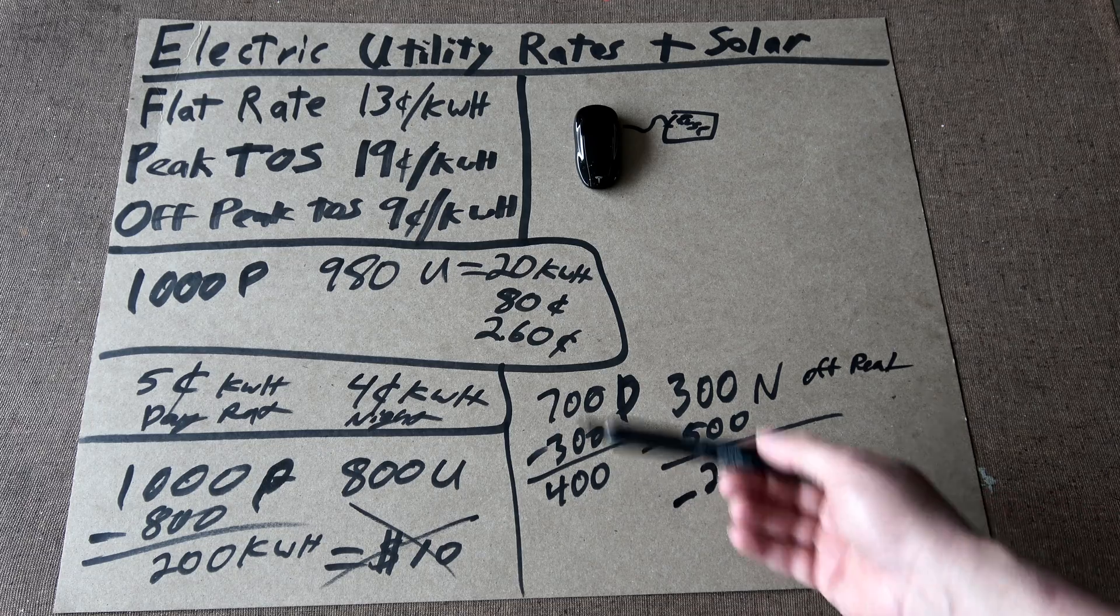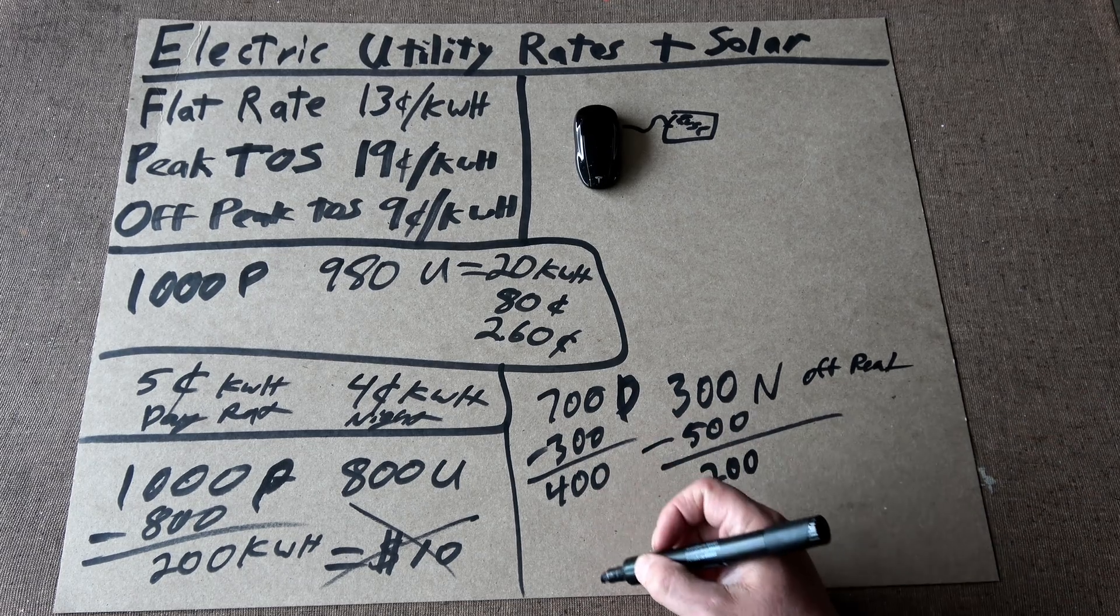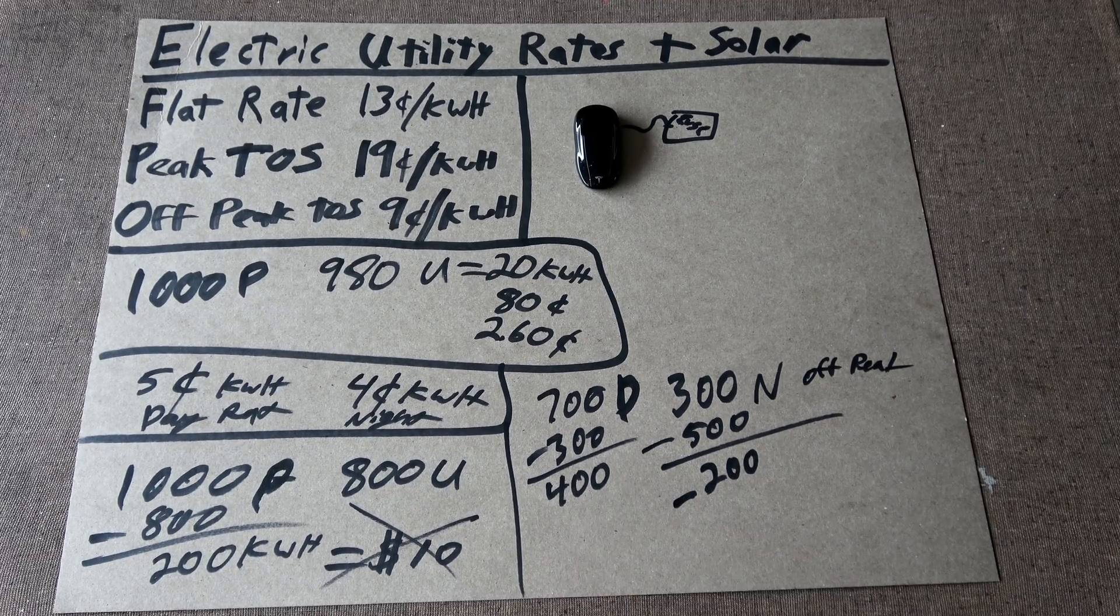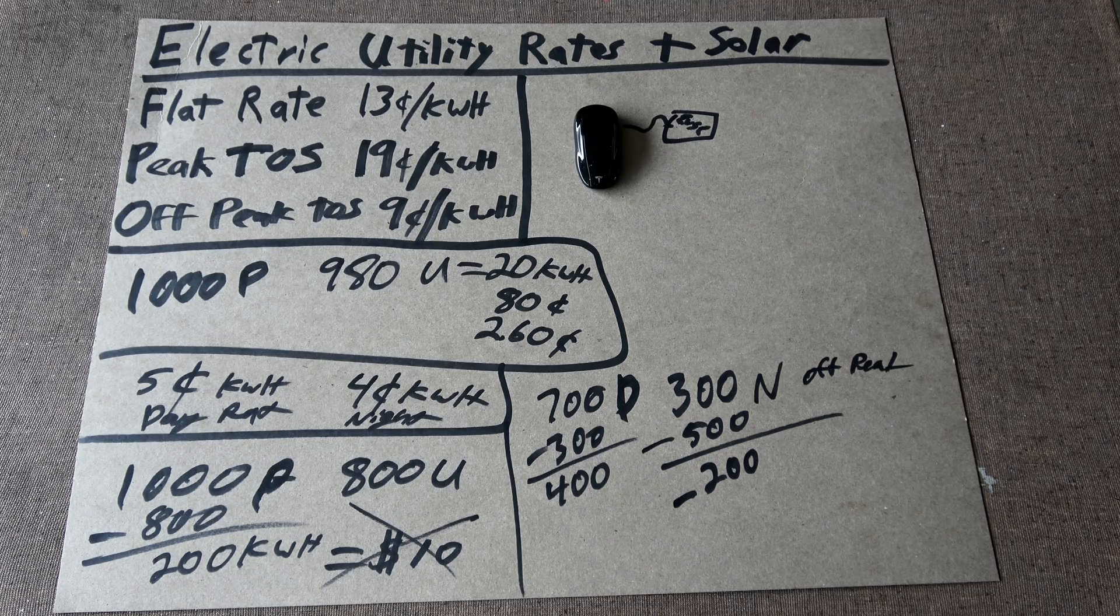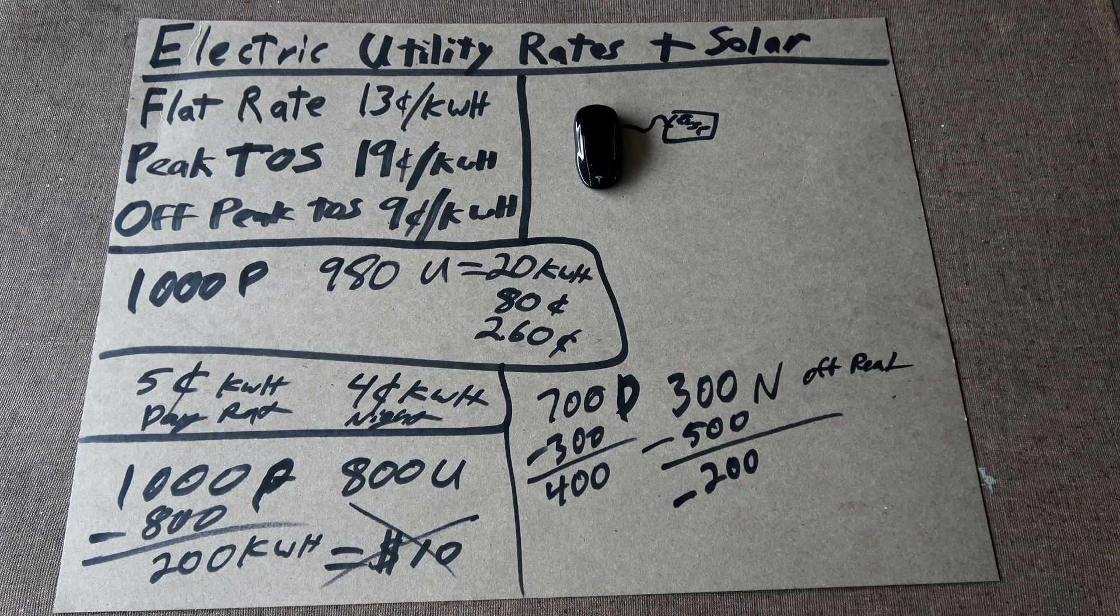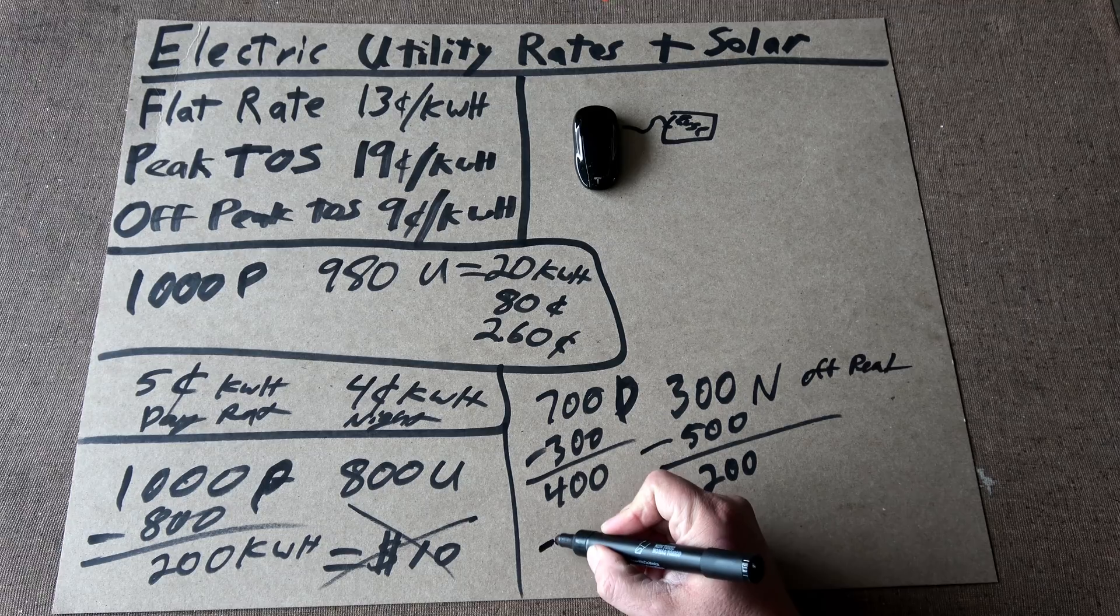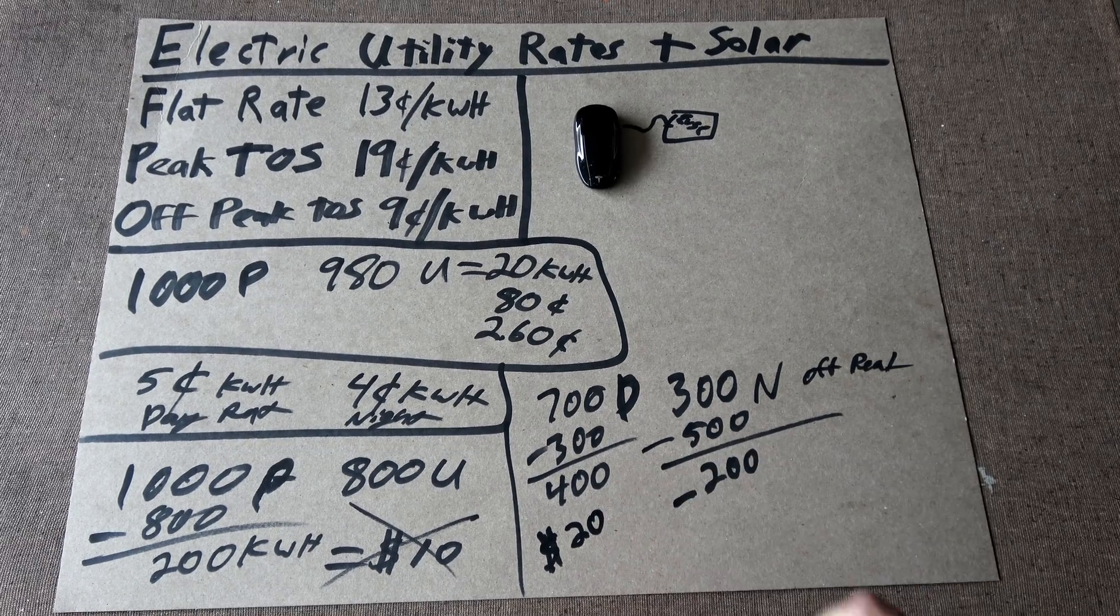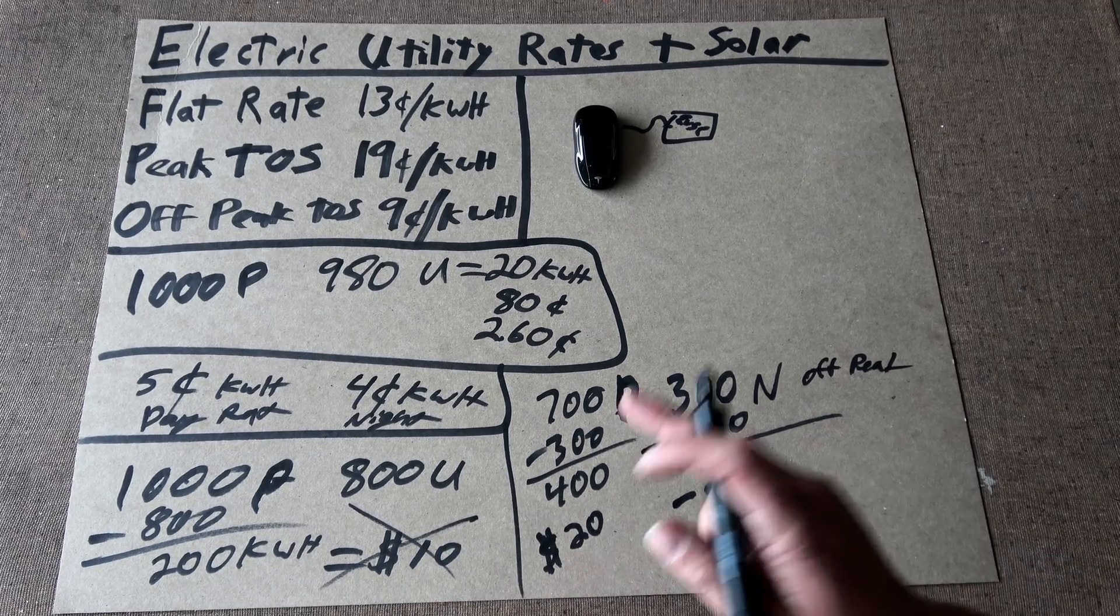You're thinking, well, they should have just subtracted everything from the daytime, right? Wrong. Very, very wrong. Instead, what they then did is they paid me the daytime rate for what I overproduced on the daytime. So, 400 overproduction times 5 cents, that would have been $20. Bear with me here. Yes, it looks like I made more money, but that's incorrect.